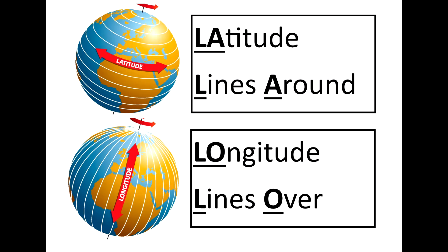Lines of latitude and longitude are used to locate places around the world accurately. Lines of latitude are lines around the world, whilst lines of longitude can be referred to as lines over the world. LA equals lines around, LO equals lines over.